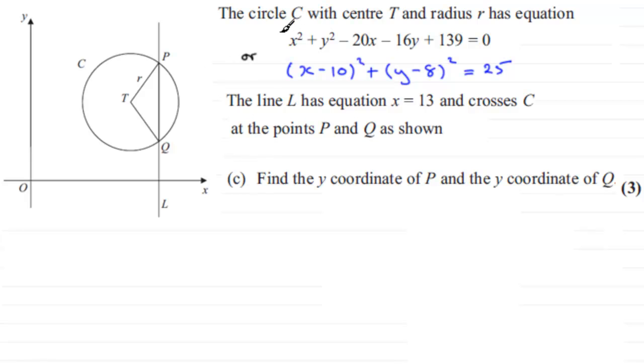You'll also notice, just as a reminder, we had the equation of the circle C. It was given to us earlier as x squared plus y squared minus 20x minus 16y plus 139 equals 0. And in previous parts, we had to find the center and the radius. And I transformed this equation into this one where we saw that the center was at 10, 8 and the radius was the square root of 25.